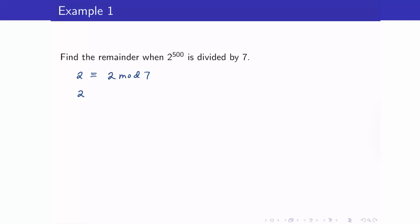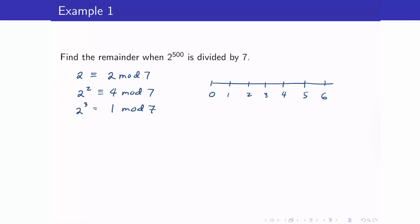2 is congruent to 2 modulo 7. 2 squared is congruent to 4 mod 7. 2 cubed is 8, and 8 is congruent to 1 modulo 7, because the remainder when 8 is divided by 7 is 1. In the world of modulo 7, it's like a clock: 0, 1, 2, 3, 4, 5, 6, then 7 becomes 0 again and continues. The remainders only go from 0 up to 1 less than n.